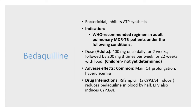Bedaquiline is another drug that inhibits ATP synthesis. At the moment it is recommended for adult pulmonary TB. The most common side effect is QT prolongation, and there are many drug interactions. We need more safety profile data before we can start using bedaquiline in children.